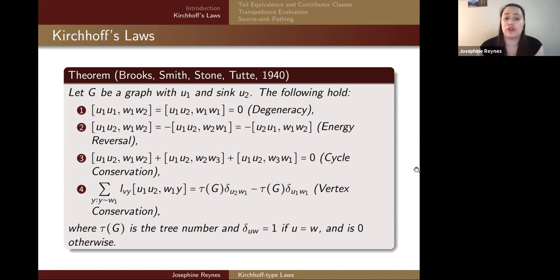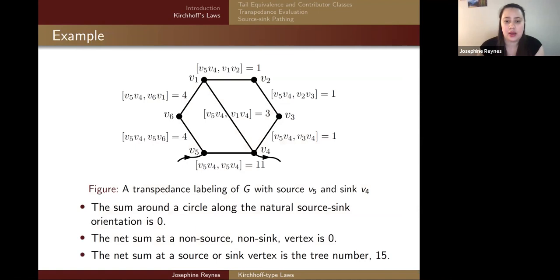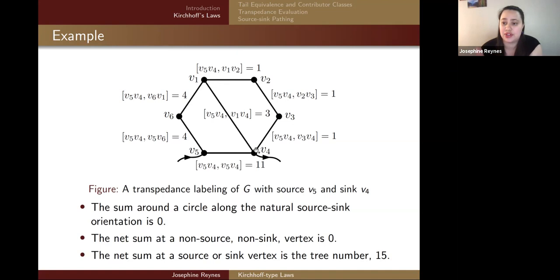These rules only work for graphs with all positive edges. Going over the sum around a circle along the natural source-sink orientation: starting at V5, we have four plus four plus one plus one plus one, which is positive 11; traveling in reverse subtracts 11, returning to zero at V5. For the star of V1, four flows in and one plus three equals four flows out, so the sum is zero. For V5 as source, four and 11 flow out equaling 15, which is the tree number. The sink also has 15 flowing in.